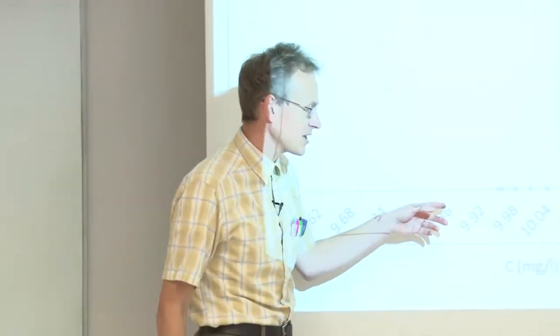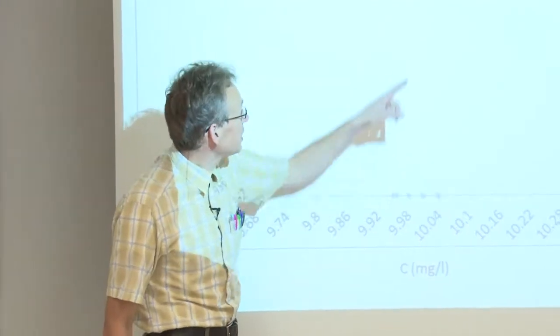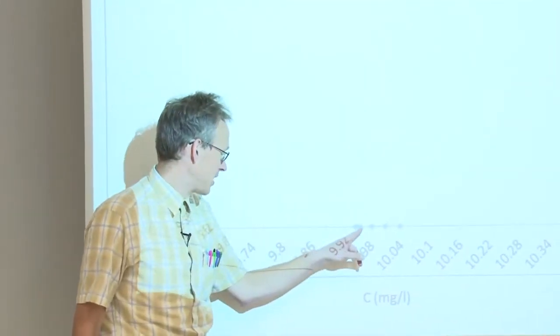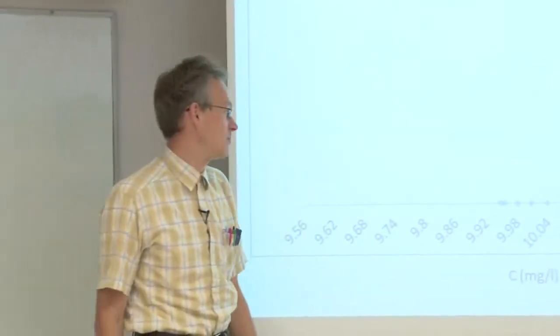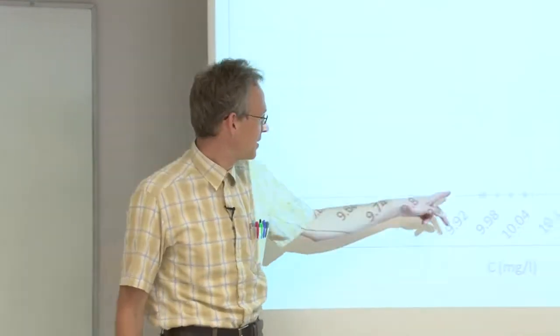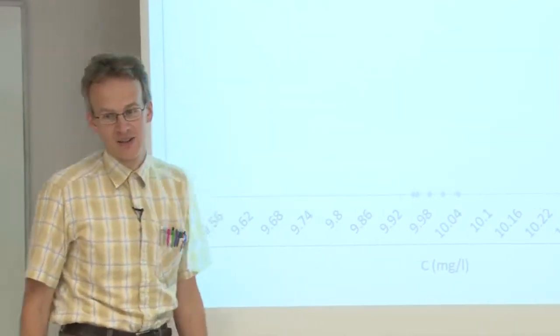Here is a scheme of a measurement result. We have a concentration axis, and on day one we obtained these results. We made five repeated measurements on that day, and their values are here.